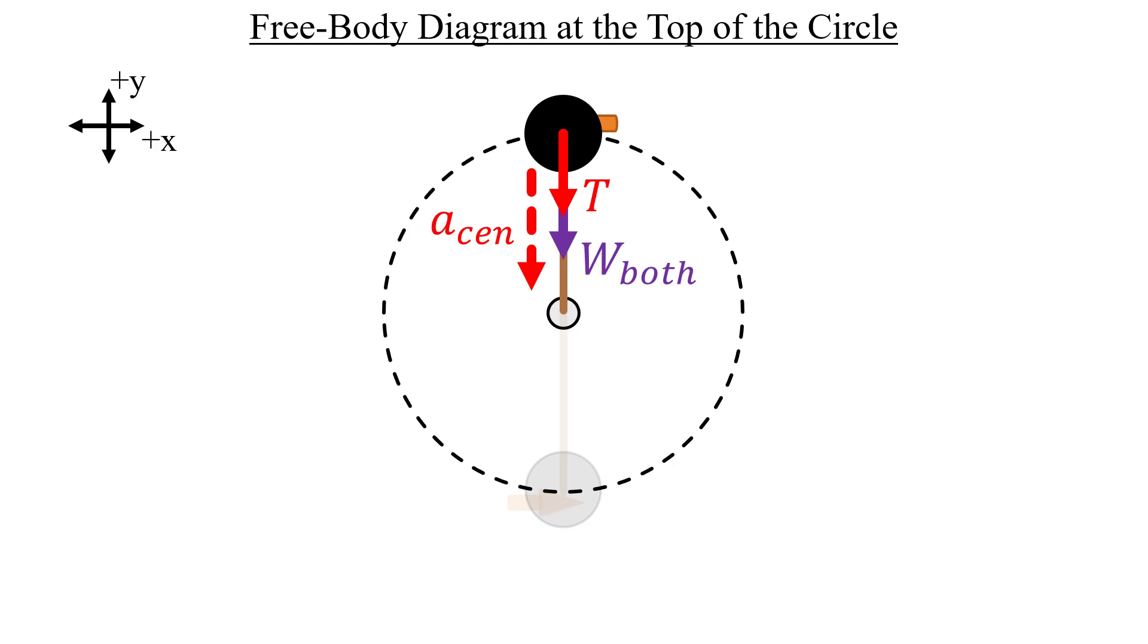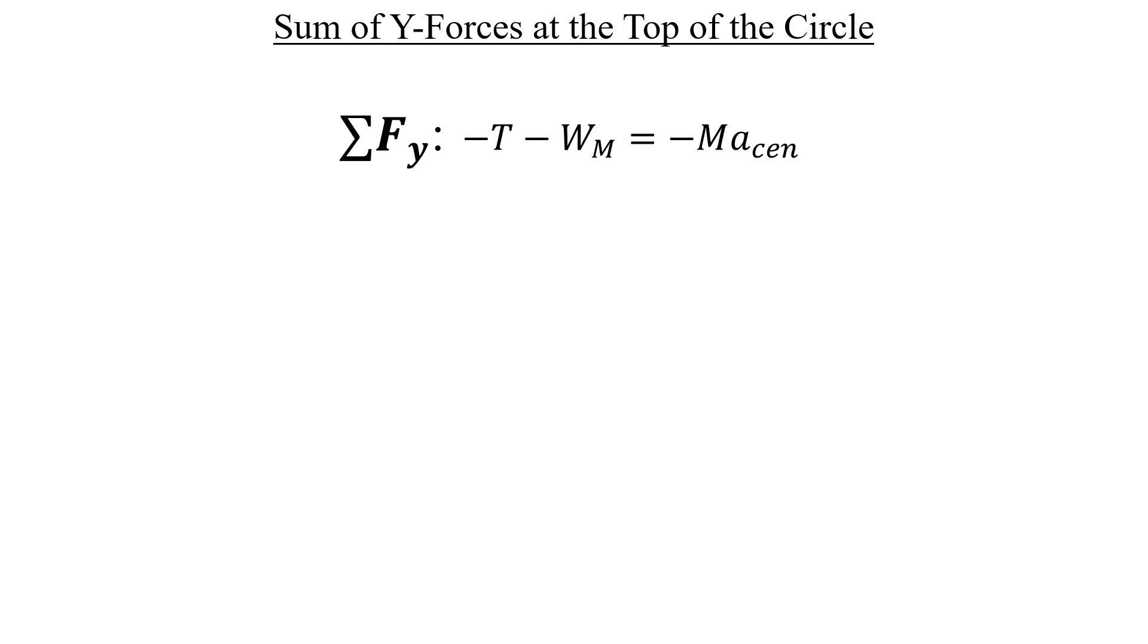If we do a sum of forces in the y direction, everything is going to be negative, which we can flip back to positive by multiplying both sides by negative one.